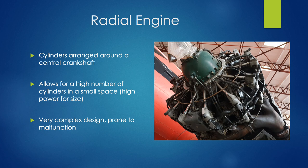The first engine we're going to look at is a radial engine. The cylinders in the radial engine are arranged around a central crankshaft — all the way around a central point. They're quite large in diameter, but this allows for a high number of cylinders in a small space, giving high power-to-size ratio. Generally they're quite complex and prone to malfunction. They're found on older aircraft and aren't used much nowadays, but they do have a lot of power, which is why they were used some years ago.